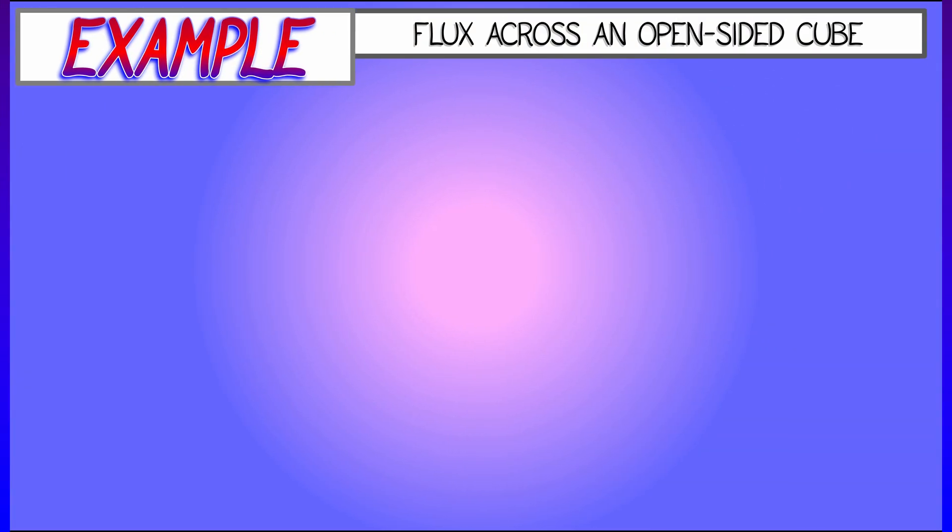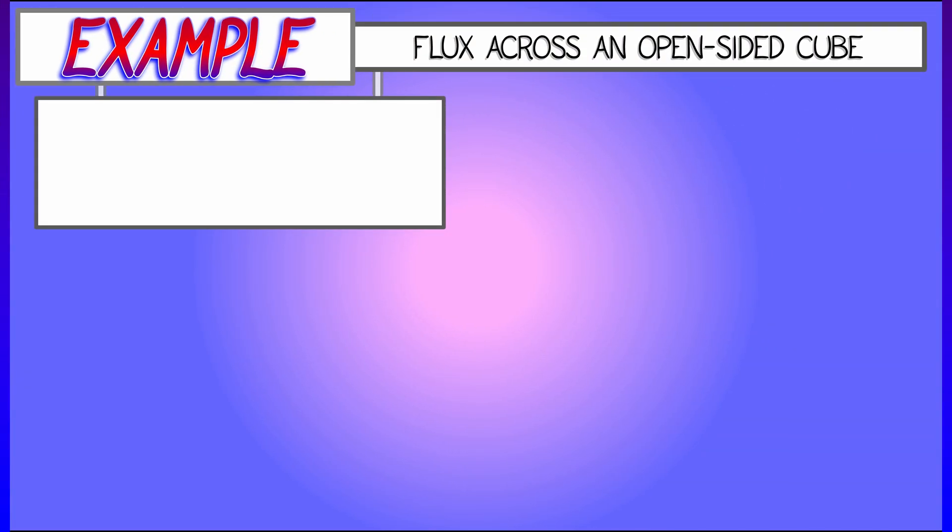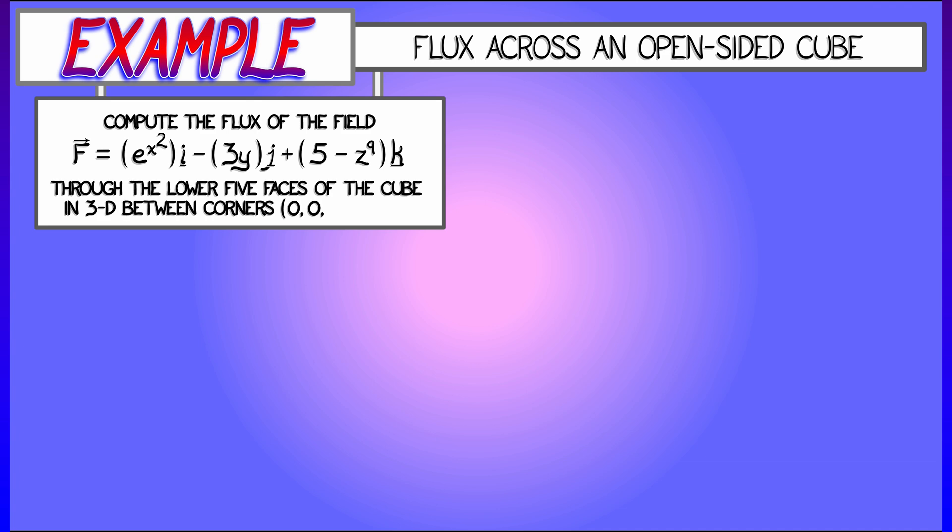Let's look at an example where this happens, an example of computing flux. Let's say I give you the vector field f, and f is e to the x squared i minus 3yj plus quantity 5 minus z to the ninth k, and I want to compute the flux of this out of the faces of a cube,